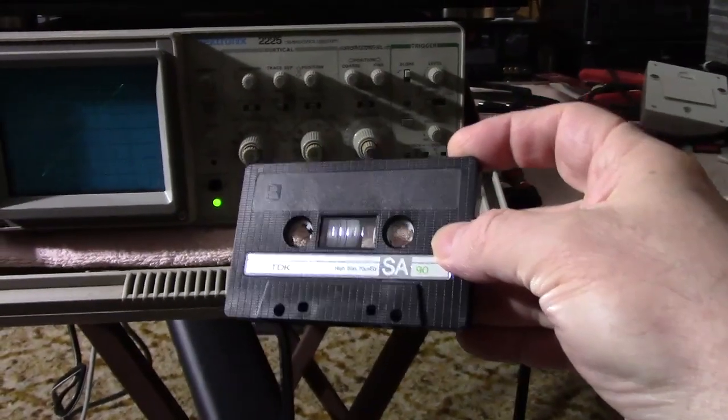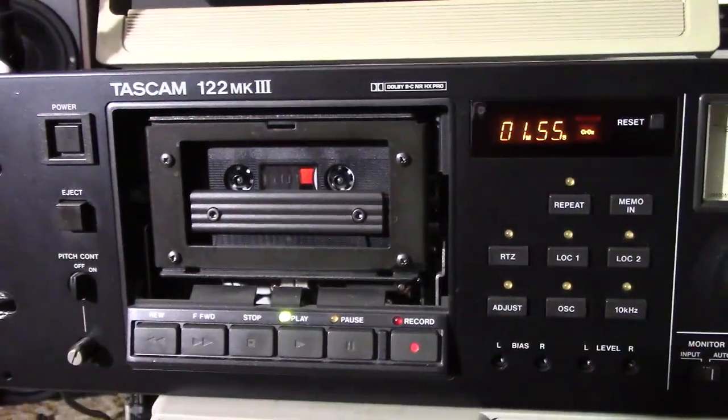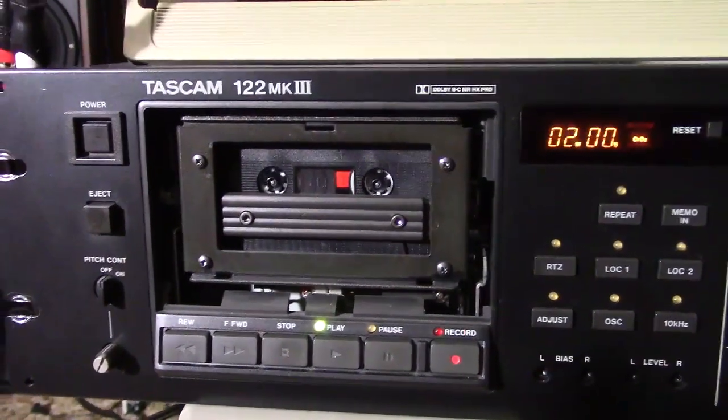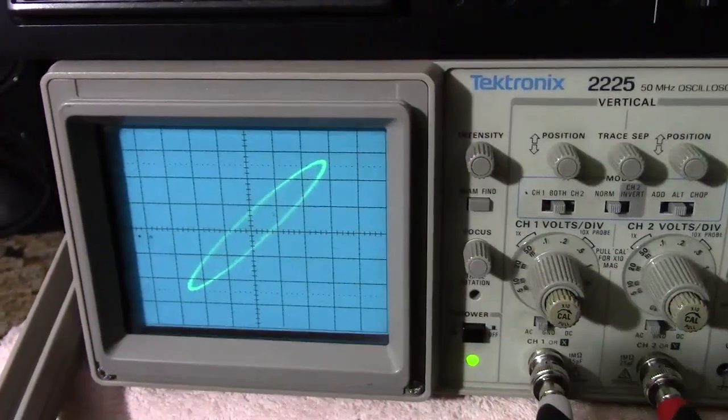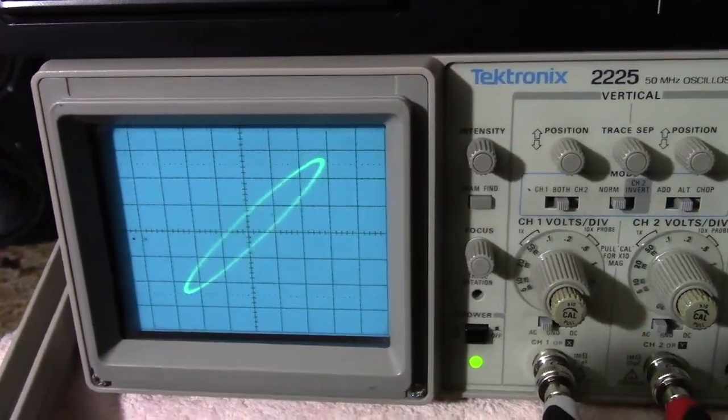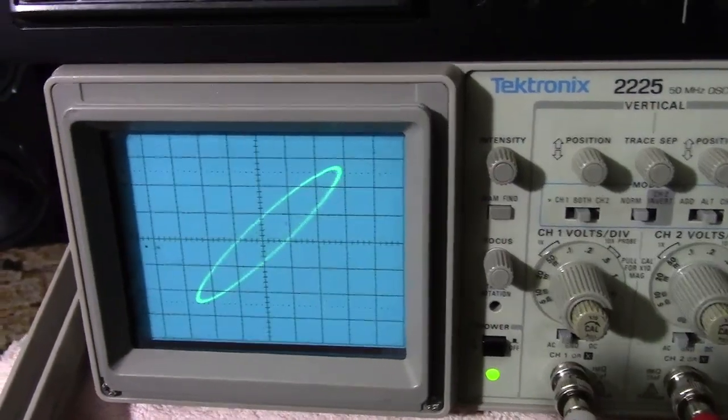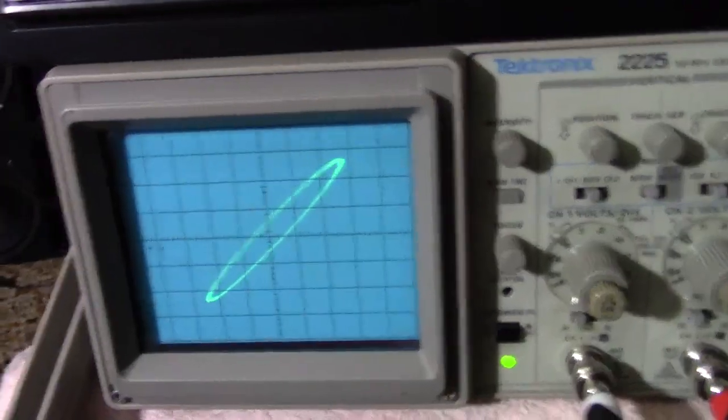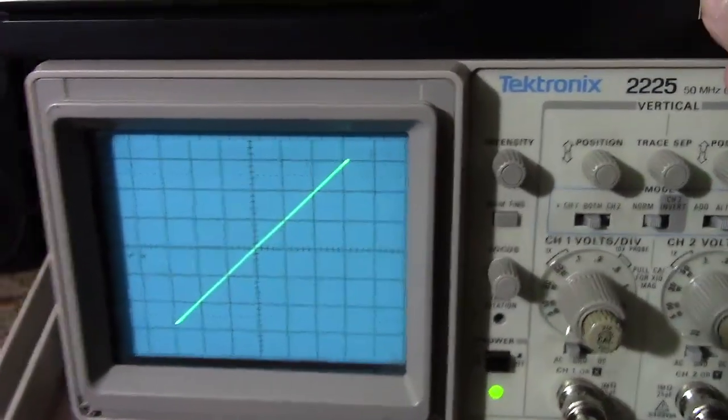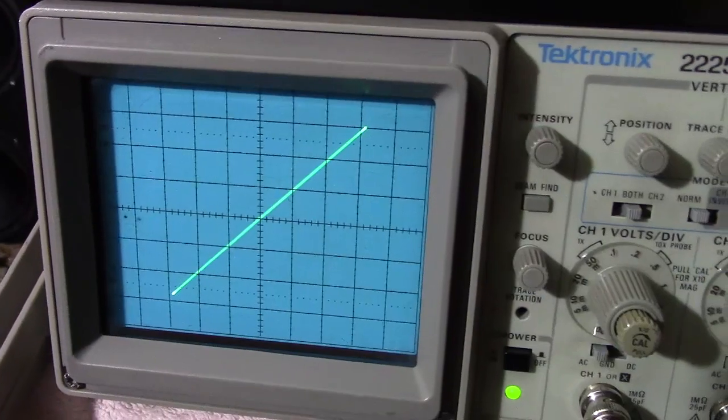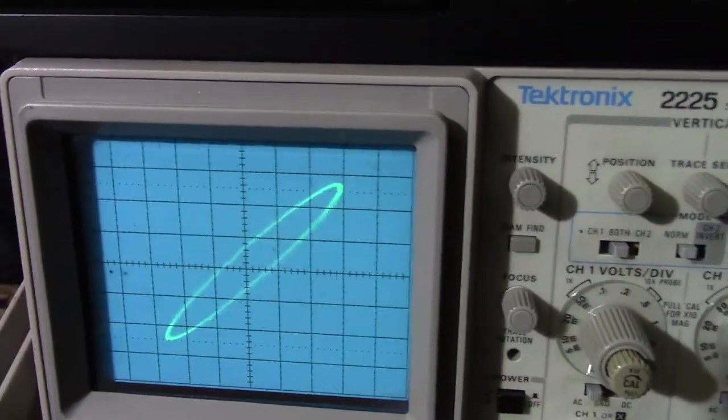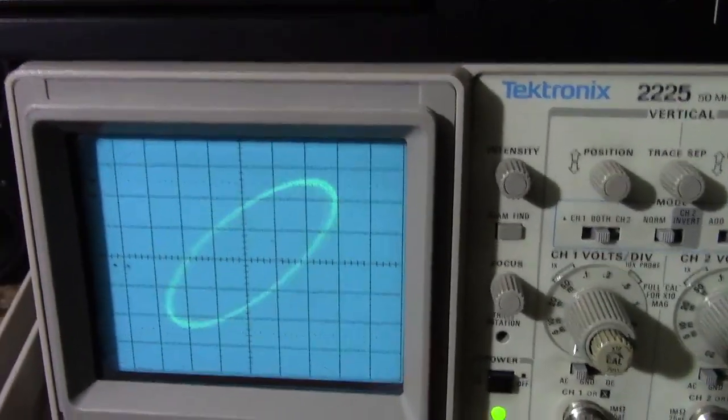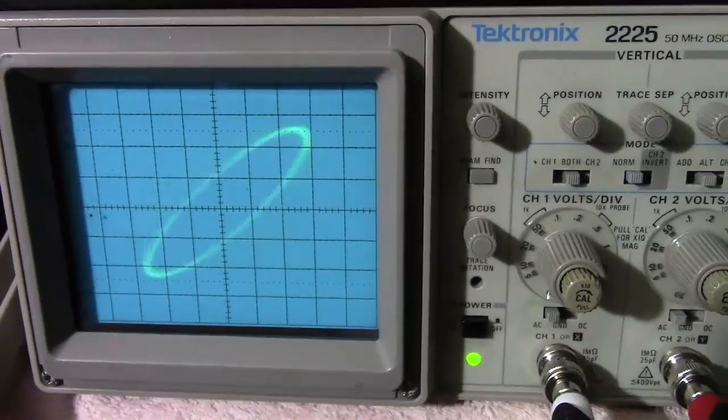Here we are back again and I've got the Tascam 122 connected up to the oscilloscope and I'm playing the tape that I recorded from the Pioneer in it. You can see that there is a slight aberration between the perfect alignment, which would look like a straight line across, and the tape that's playing across the misaligned azimuth head.